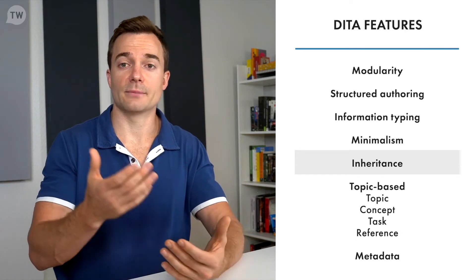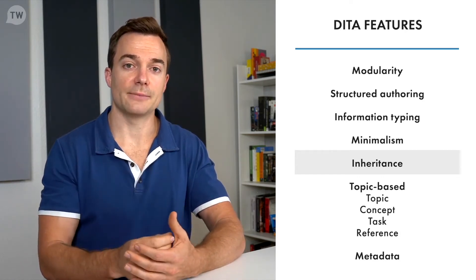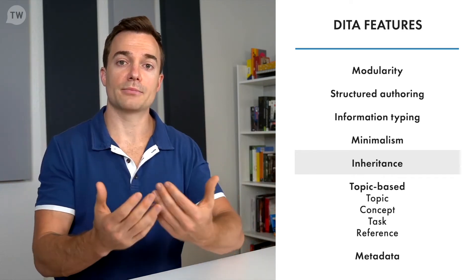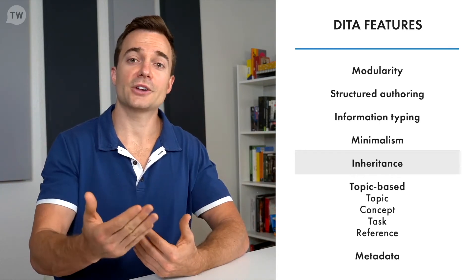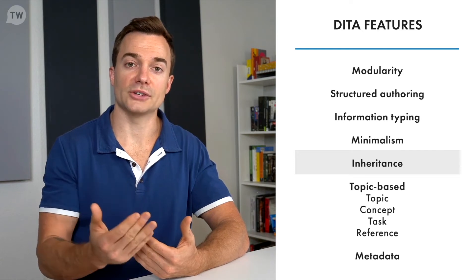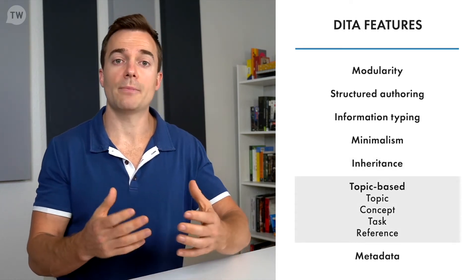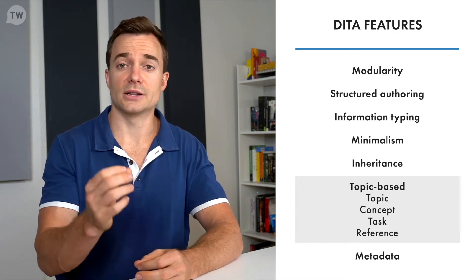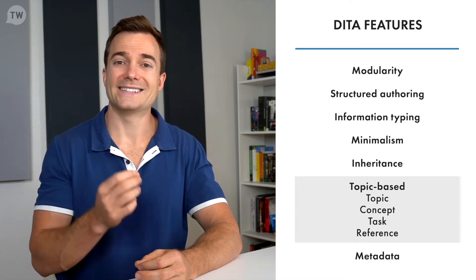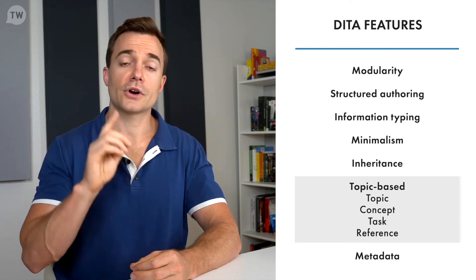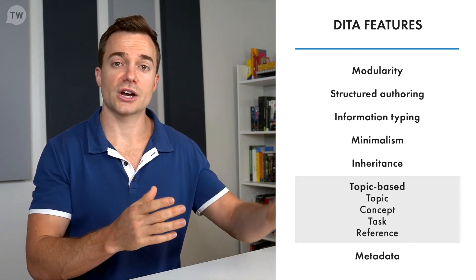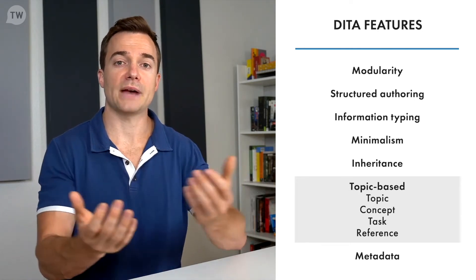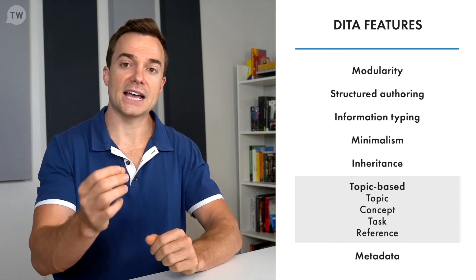DITA includes inheritance, which enables specialization of information types. The three base information types — concept, task, and reference — evolve from the topic proto-information type and inherit the characteristics of a shared base structure. DITA also features topic-based architecture, which allows information reuse and makes translation and localization more efficient. DITA defines four types of topics: topic, which provides a generic structure; concept, which contains background information and examples; task, which includes procedures; and reference, which describes commands, parameters, and other features.